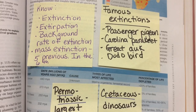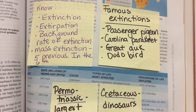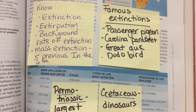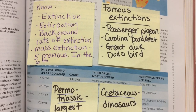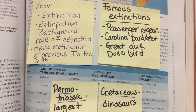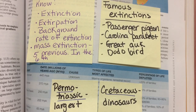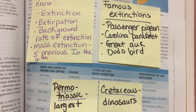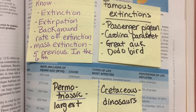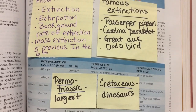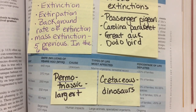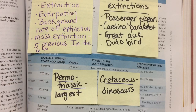Background rate of extinction — we normally have species go extinct; that's called the background rate. Species have been going extinct for thousands and millions of years, but that rate is increasing because of human activities, higher than what should normally be happening. In the past, we have had five previous mass extinctions, and we're in the middle of the sixth, which is human-caused. You need to know that the sixth is human-caused.